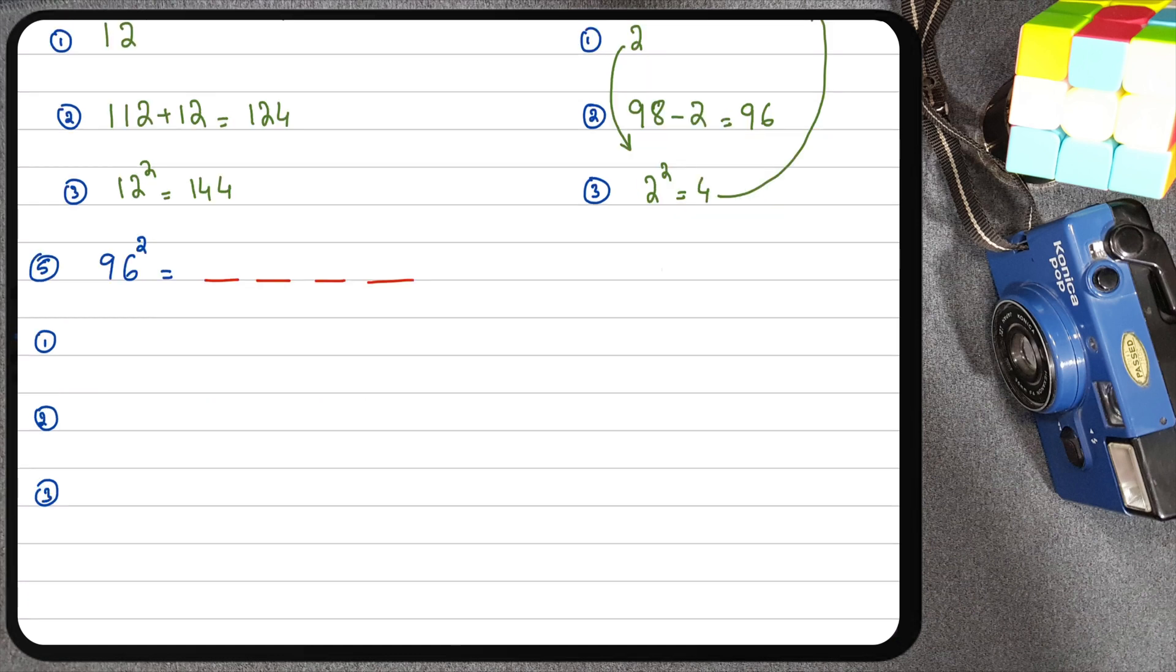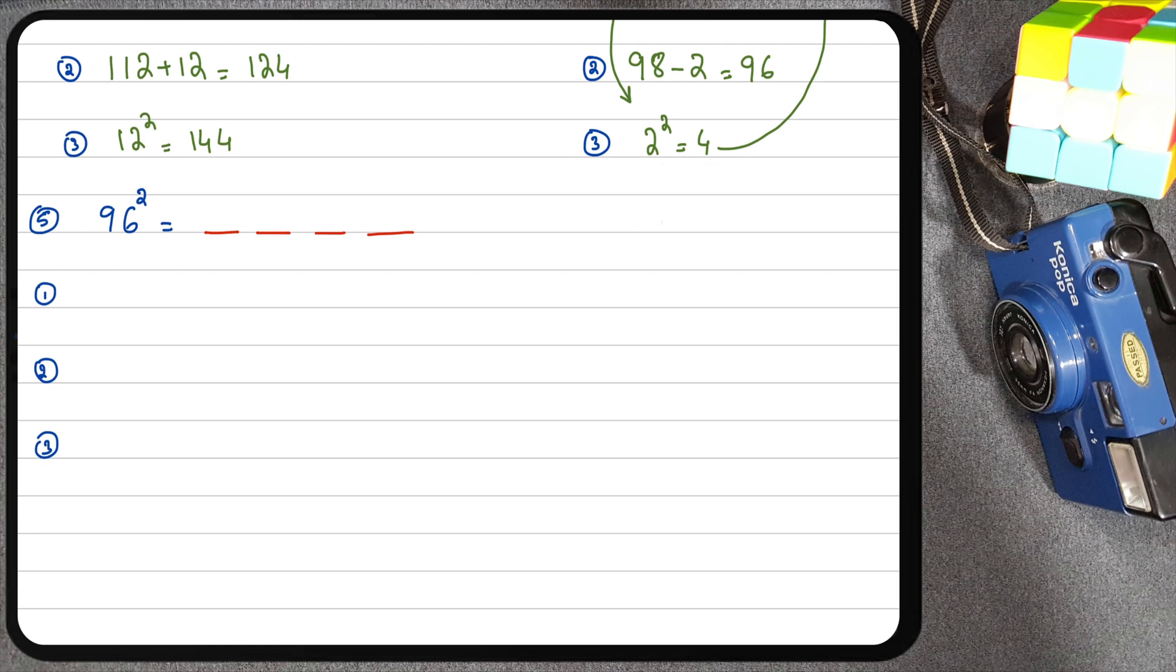We have the fifth and final example in which we have to square 96. First things first, we're going to find out the difference between 96 and 100. The answer to that is 4. Let's subtract 4 from 96. 96 minus 4 is 92, so we have the first two digits. For the remaining two digits we're going to take this 4 and square it. 4 squared is 16, so here we have the remaining two digits and the answer is 9,216.